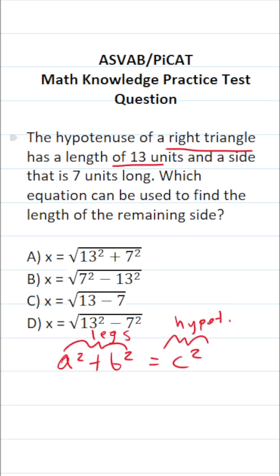In this case, we're given the length of the hypotenuse. We know it's 13 units, so we can plug in 13 for c. So this becomes 13 squared. And we're given one of its side lengths, one of its legs, so we can plug in 7 for a.